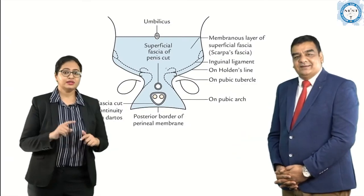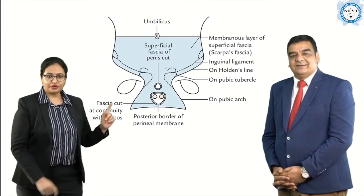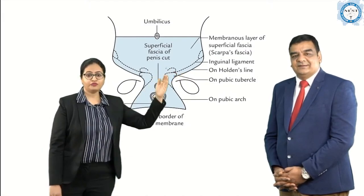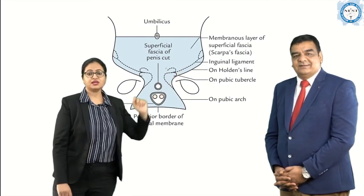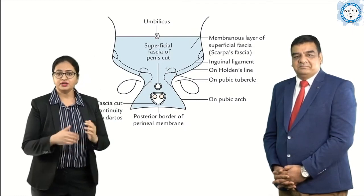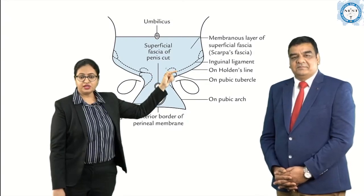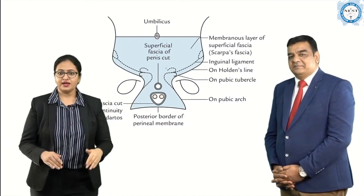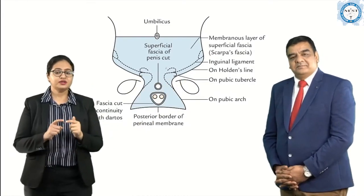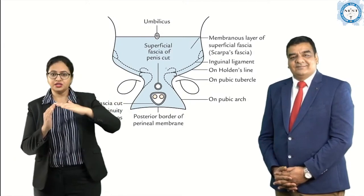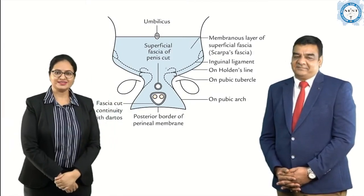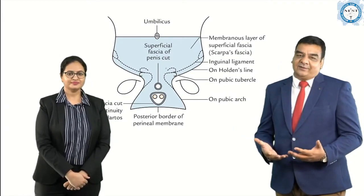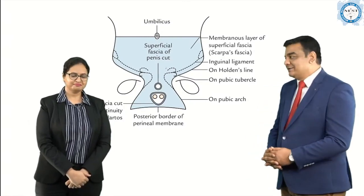How do the fascias limit extravasation to other areas? Scarpa's fascia is attached to the fascia lata of the thigh just below and parallel to the inguinal ligament — this line is known as Holden's line. Because of this attachment, the urine cannot go towards the thigh. Additionally, because Col's fascia merges with the perineal membrane posteriorly, the urine cannot go towards the posterior aspect into the ischio-rectal fossa.